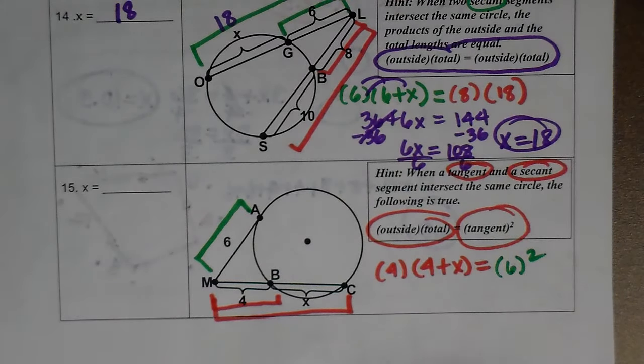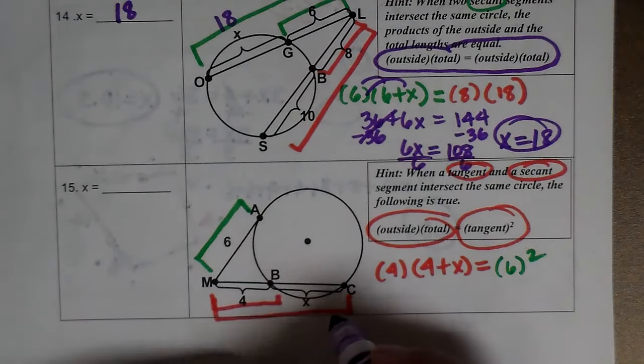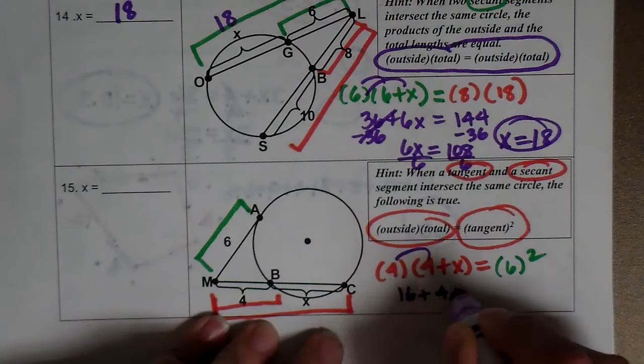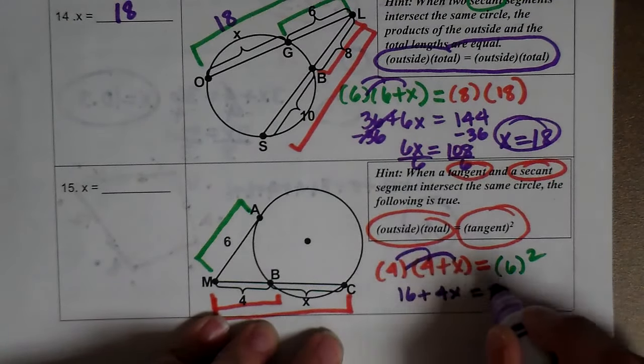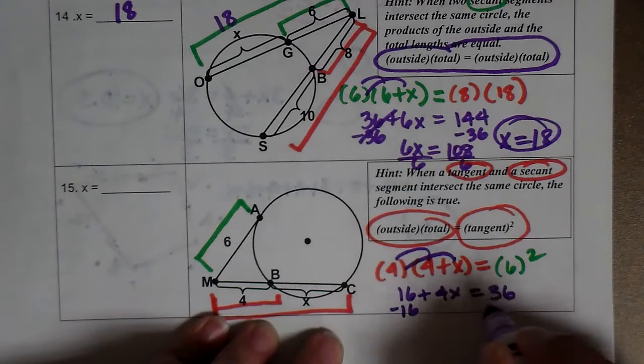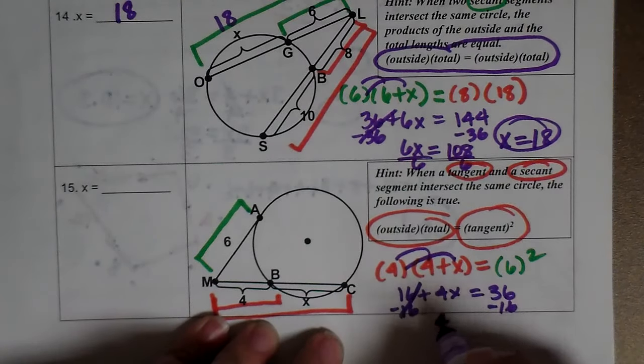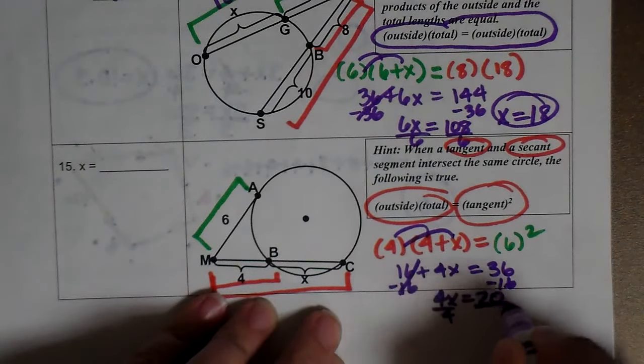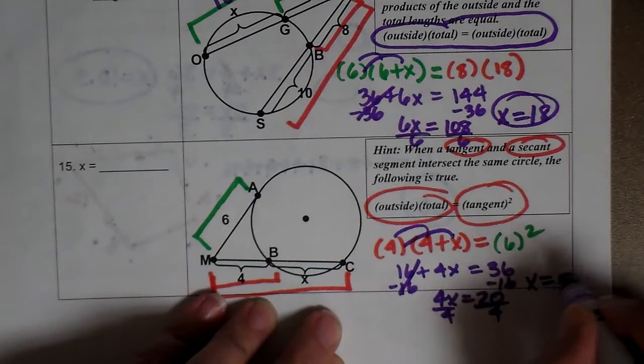Because you're squaring the tangent to make it equal, the outside times whole equals squared. So distribute. So 16 plus 4x equals 36. Subtract 16. So 4x equals 20. Divide by 4. So x equals 5.